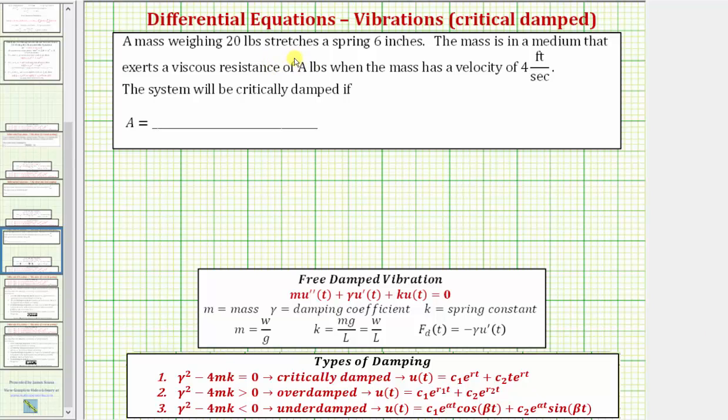A mass weighing 20 pounds stretches a spring 6 inches. The mass is in a medium that exerts a viscous resistance of a pounds, where a is unknown, when the mass has a velocity of 4 feet per second. The system will be critically damped if a equals how many pounds, where a is the viscous resistance when the mass has a velocity of 4 feet per second.